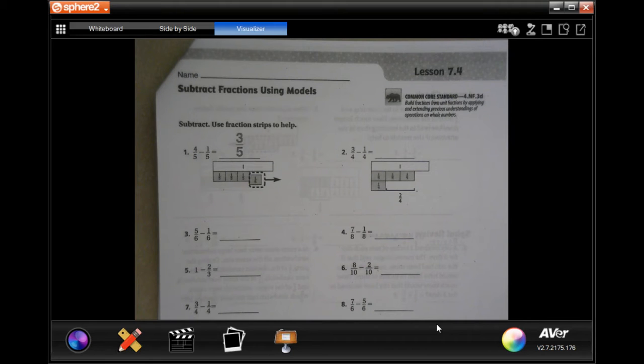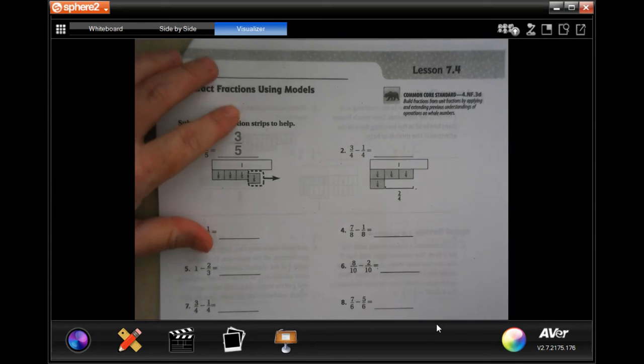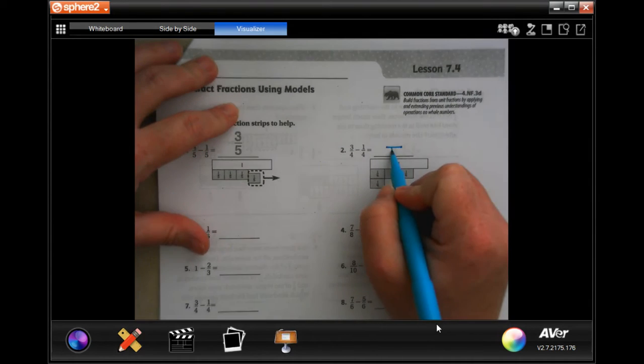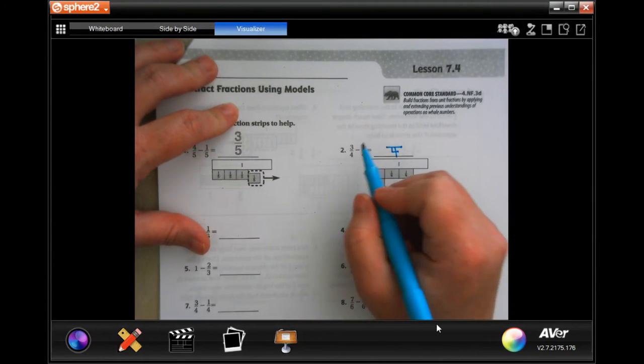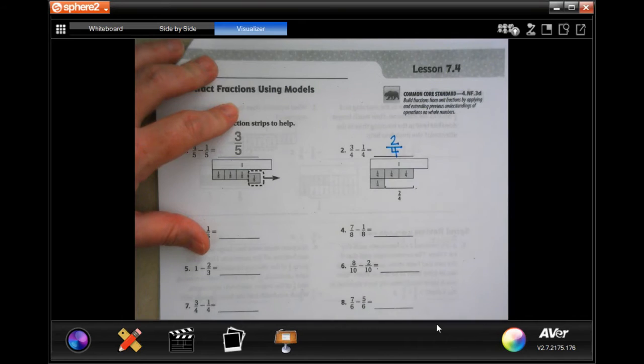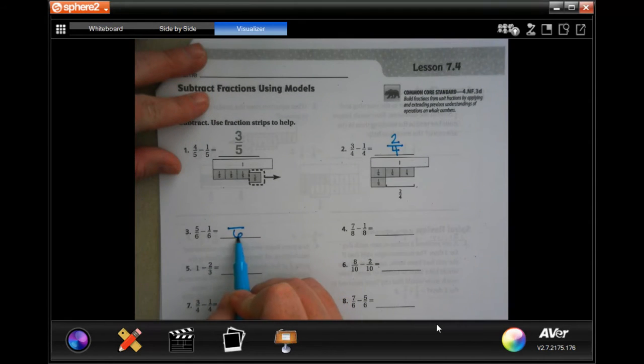We're doing the exact same thing we were doing when we were adding fractions, but we're just subtracting this time. So, the denominator still stays the same. And 3 minus 1 is 2.